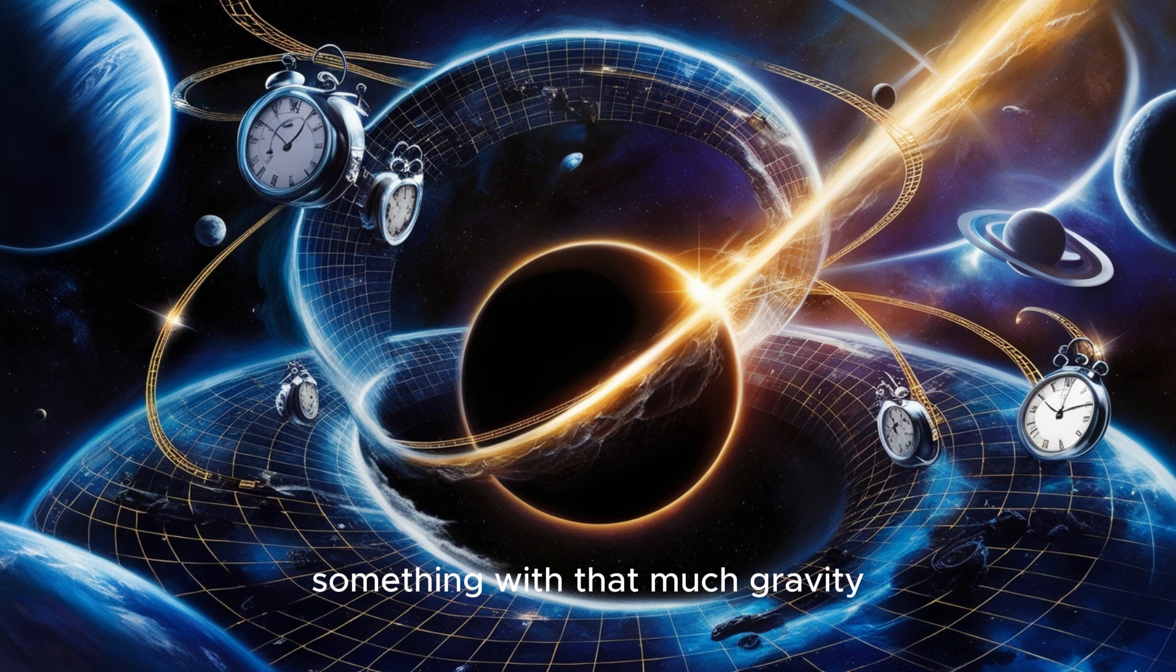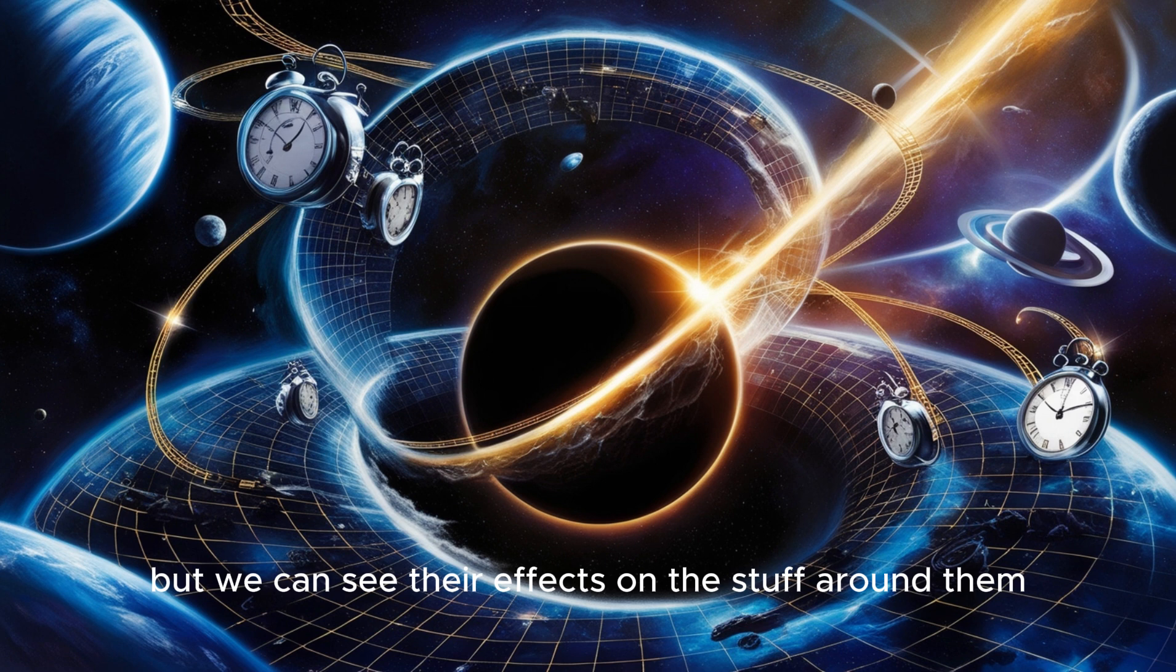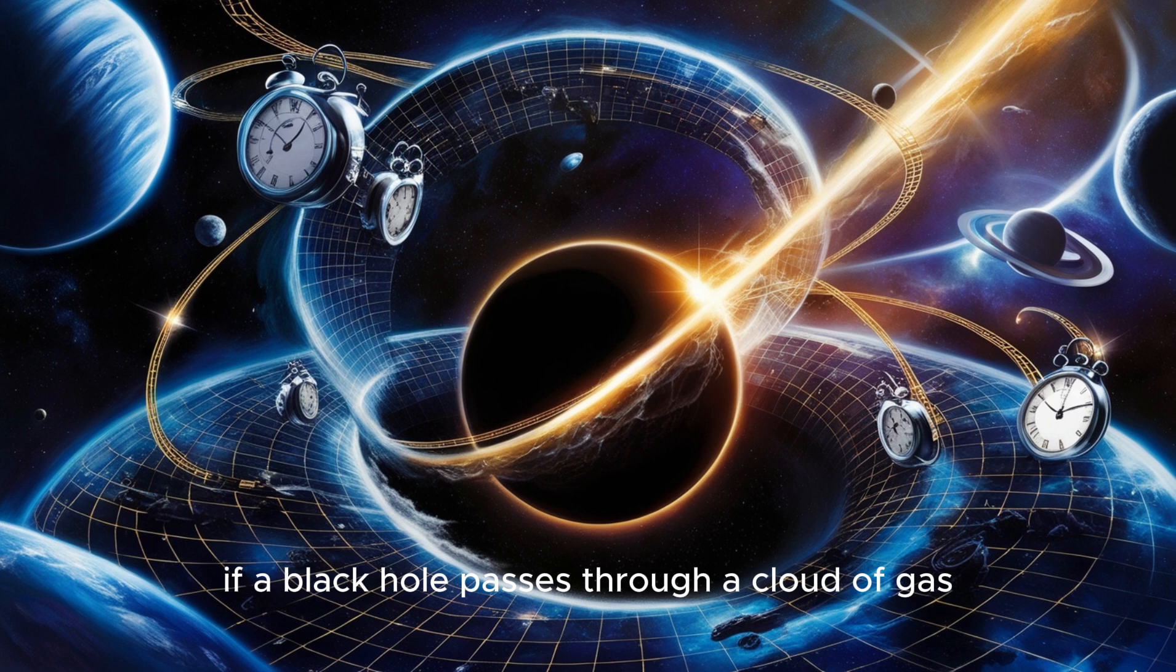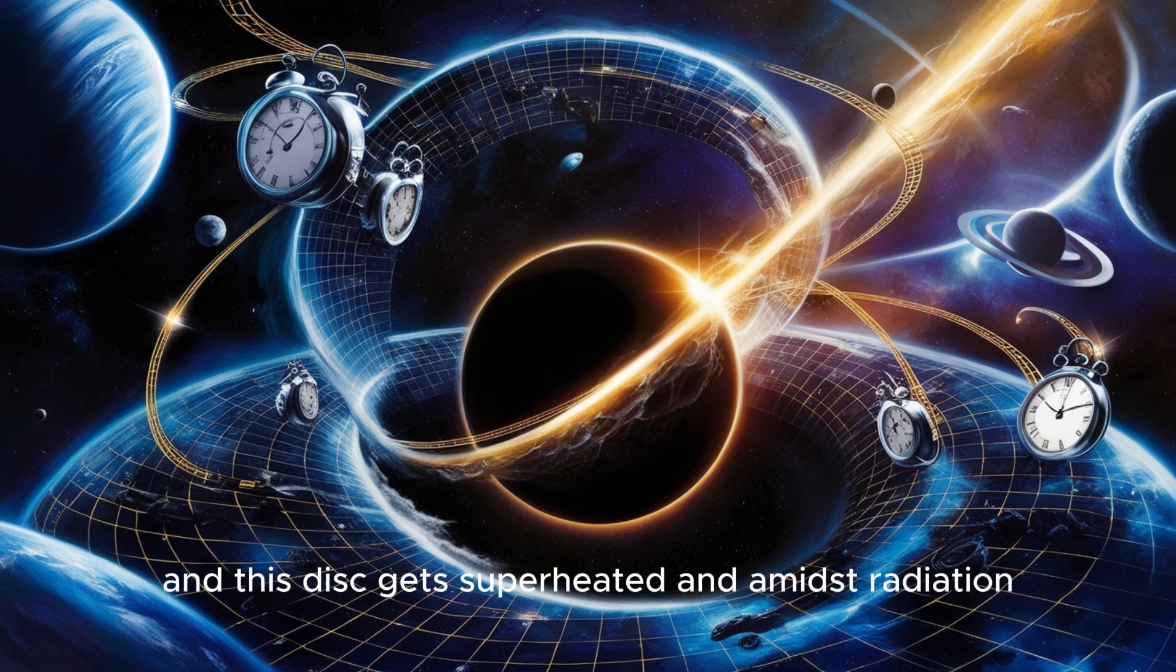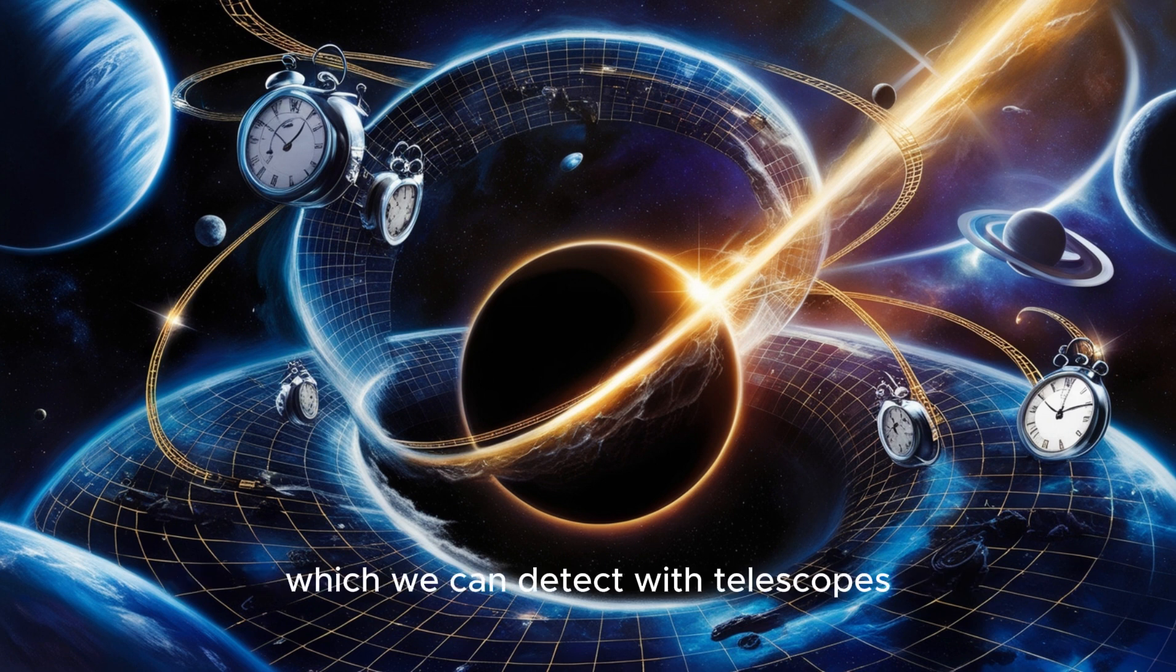It's hard to even imagine something with that much gravity. But if light can't escape black holes, how do we even know they're there? We can't see black holes directly, but we can see their effects on the stuff around them. Like what? Well, if a black hole passes through a cloud of gas, for example, it'll pull that gas inward, creating what we call an accretion disk. And this disk gets superheated and emits radiation, which we can detect with telescopes. So we can see the black hole's shadow. Exactly.